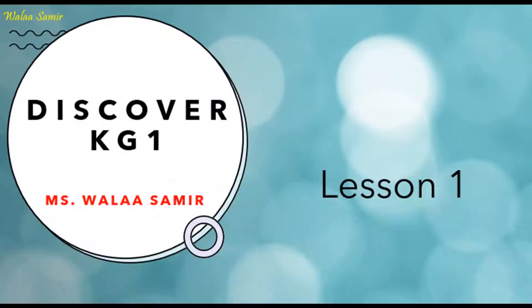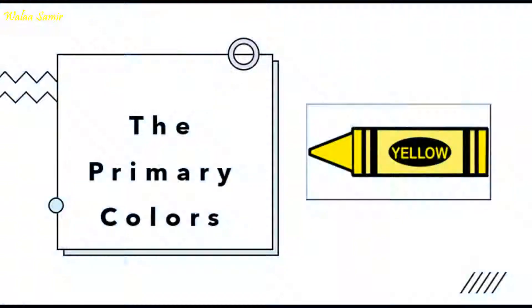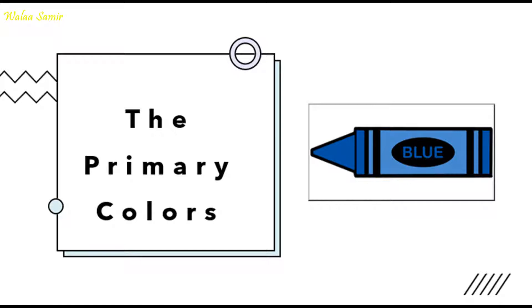Let's start with Listen 1 words. The primary colors. The first primary color is red. The second is yellow. The third is blue.